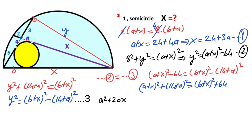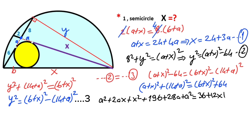Expanding: a squared plus 2ax plus x squared plus 196 plus 28a plus a squared equals 36 plus 12x plus x squared plus 64. Combining like terms gives 2a squared plus 2ax plus 28a plus 196 on the left side.